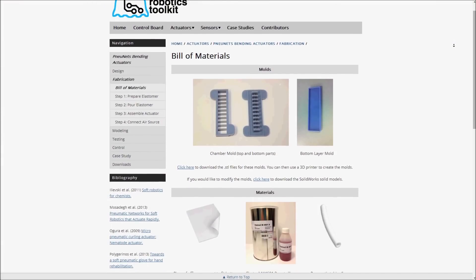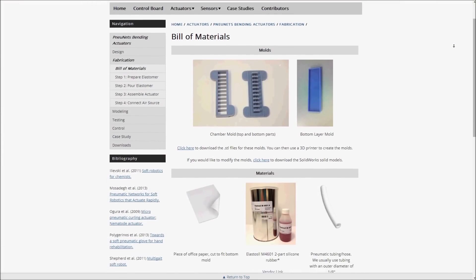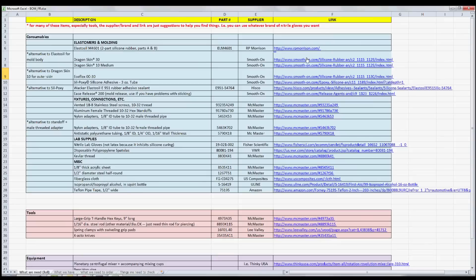The website lists all of the parts required for building soft robots, as well as links to suggested suppliers.